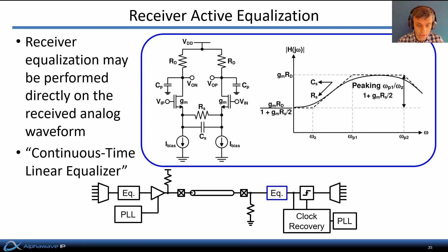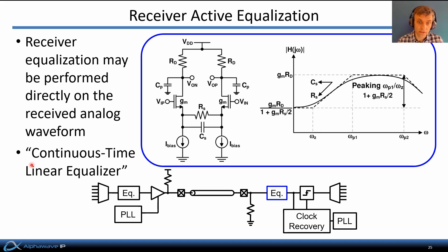Active equalization circuits are often also incorporated into the analog front end of the receiver. A circuit like this is quite common — an RC degenerated differential pair offers a frequency response with a low-frequency zero that gives rise to a high-pass shaped frequency response. Circuits like this are often referred to as continuous-time linear equalizers, because they operate in continuous time and are intended to be linear high-pass filters on the received waveform.